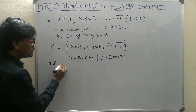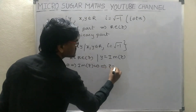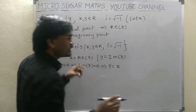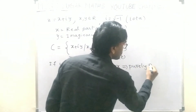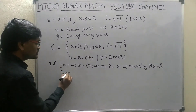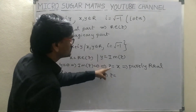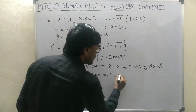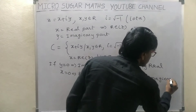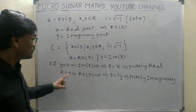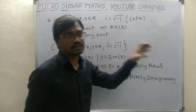Now students, if Y is equal to 0, that means the imaginary part of Z is equal to 0. Then the complex number is equal to only X, and the complex number is called purely real. When X is equal to 0, that means the real part of Z is equal to 0, then the complex number Z is equal to iY and it is called purely imaginary.